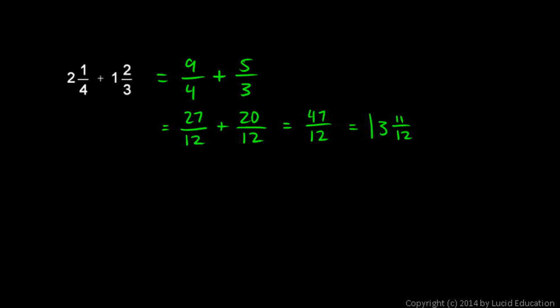Now there's another way to do this. Instead of adding them in this manner, we realize that 2 and 1/4 is the same thing as 2 plus 1/4, and 1 and 2/3 is the same thing as 1 plus 2/3. I can treat the 2 and the 1 separately from the 1/4 and the 2/3 because everything is just added together and the order doesn't matter. So instead I could write this: 2 plus 1 plus 1/4 plus 2/3.